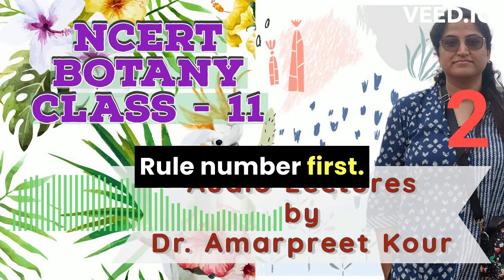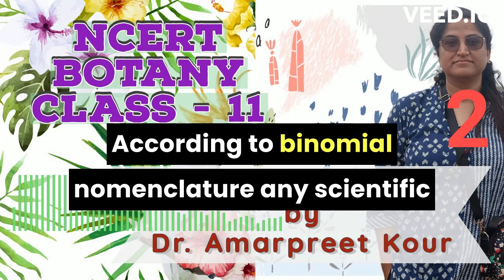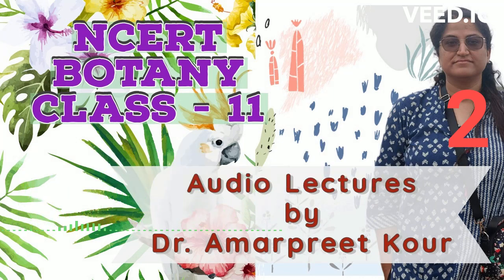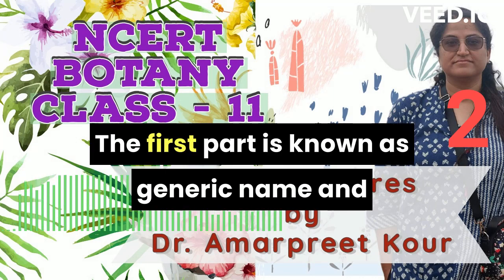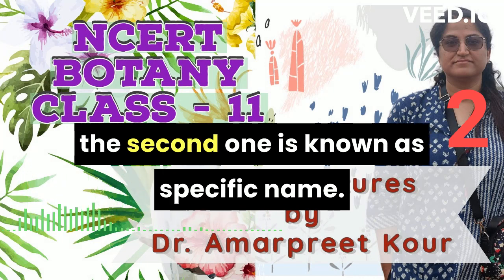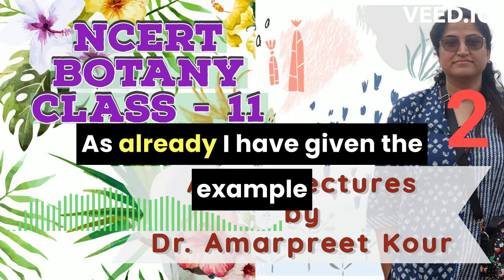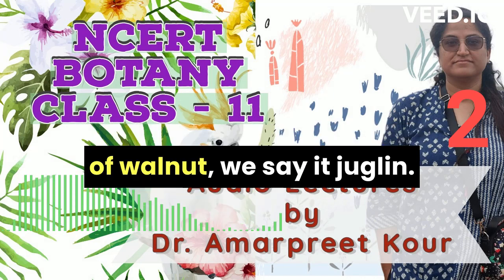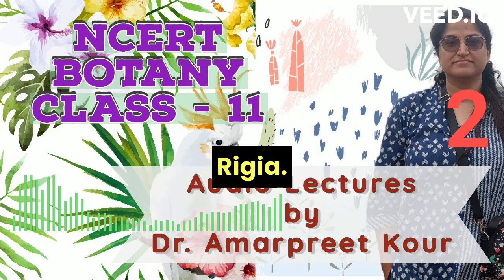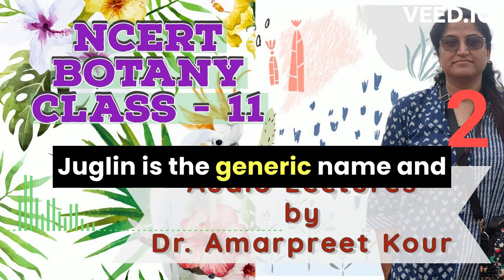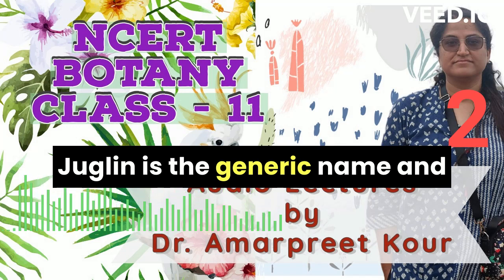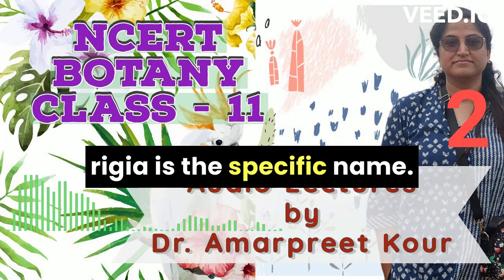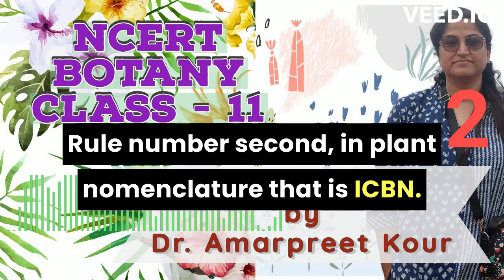Rule number one: according to binomial nomenclature, any scientific name has two parts. The first part is known as the generic name and the second one is known as the specific name. As already shown in the example of walnut, we say it Juglan regia — Juglan is the generic name and regia is the specific name.